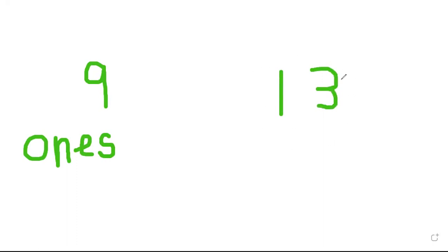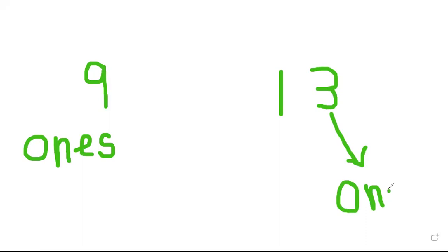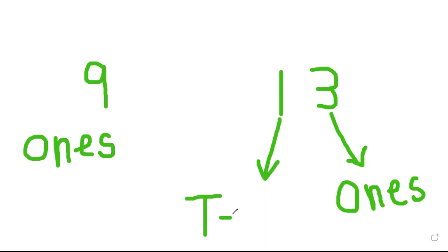But how about when we have a two-digit number? Let me write a number here. You guys can see there are two numbers: three and one. We call this a two-digit number. Here is the three — this is the first number, and we call this number ones. Here the one is the second number, and we call this number tens — the one's value is tens.